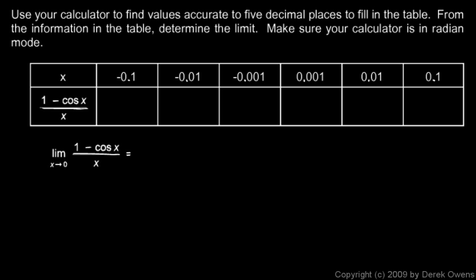So look at the x values: negative 0.1, negative 0.01, negative 0.001. These three numbers are getting closer and closer to 0 from the left, and then here we have 0.1, 0.01, 0.001. These three numbers are getting closer and closer to 0 from the right, so 0 would be right here in the middle. We can't actually find the value of the expression at x equals 0, because we have a 0 denominator right there.